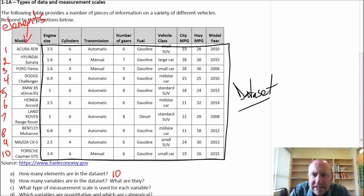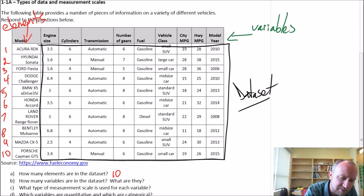Now for each of these elements I have a number of different pieces of information and those are what we call our variables. So across the first row here I have the labels of all of our variables. A variable is a unique piece of information that we have for each of the elements. So in this data set I have information on engine size, number of cylinders, transmission,